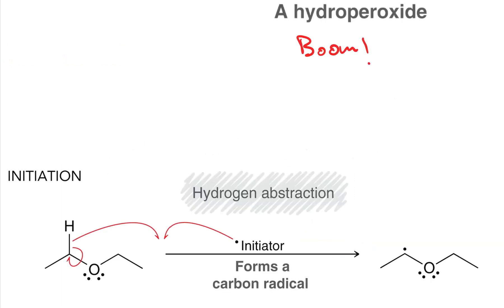Let's have a look at the mechanism for ether auto-oxidation. In the first step some initiator, some free radical present in your lab or in the air, performs hydrogen abstraction. This creates a radical on an alpha carbon of the ether.